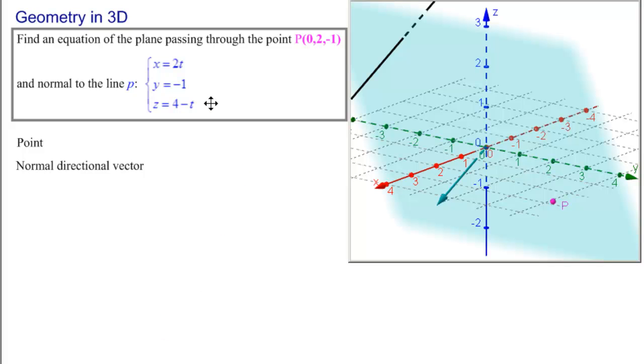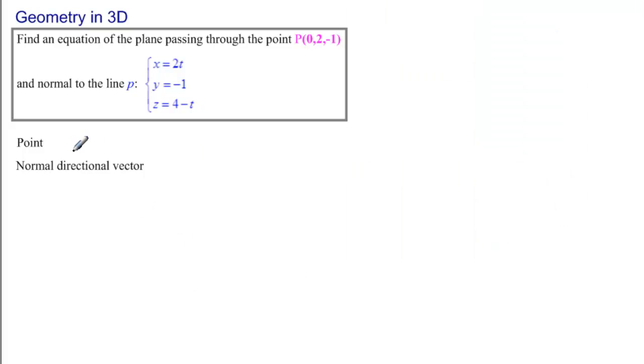So how do we get the directional vector from the line p? We have our point P(0, 2, -1), and we need to get the normal directional vector from the line.